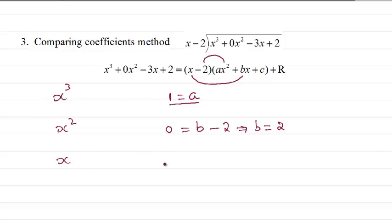Then x term, we've got minus 3 here. So the x term will come from when we multiply this x to the constant c, or we multiply this minus 2 to the x term there. So we get c times 1. Then we get minus 2 times b. b is 2. So that's minus 4. So from here, we get c equal to 1.